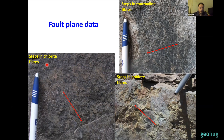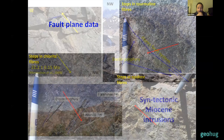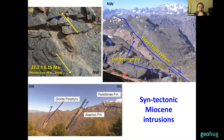There were also several cases of Miocene intrusive units emplaced along some of these faults with different orientations, in some cases showing evidence of syntectonic emplacement with a magmatic foliation parallel to the faults.